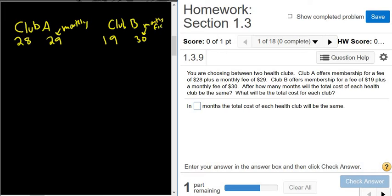So we're asked after how many months will the total cost of each health club be the same. So we're going to let x be the variable we're looking for. So x is the number of months, and we want the total cost to be the same. The total cost for Club A, we're going to write that down now. So it's $28, that's the one-time fee, plus $29 per month, so times x.